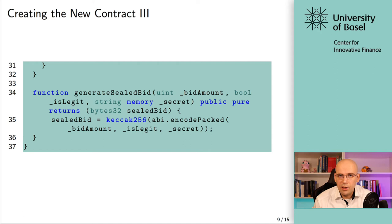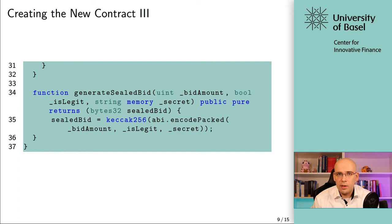Just to be very clear: this is not the entire sealed bid auction contract yet. In this video, we just introduced the hashing and some complex types — basically the way you generate the hash value used for the commit. The bidding itself, the resolution, and all the logic needed will be part of the next video. In this video, I just want you to get comfortable with the theory and also with coding this pure function that allows you to get the hash value through an actual function call.